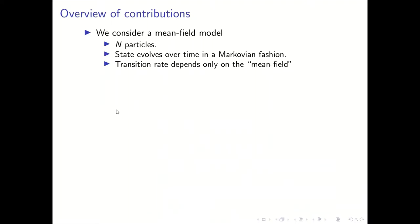Here are my contributions. We first consider what is called a mean field model. In the mean field model, there are N particles and each particle has a state associated with it, which evolves over time in a Markovian fashion. The transition rate depends only on the mean field, or the transition rate depends only on what fraction of particles are in state 1, what fraction of particles are in state 2, and so on. That's called the mean field.